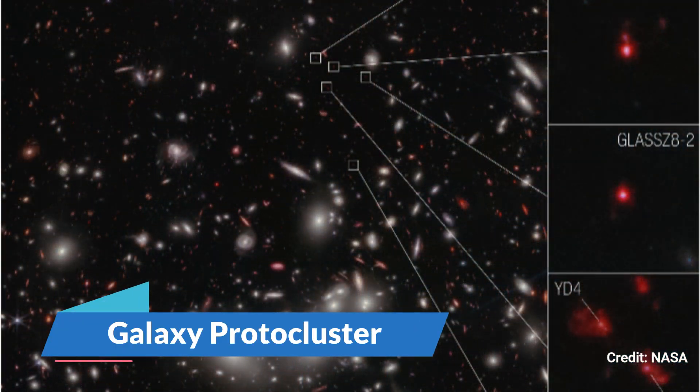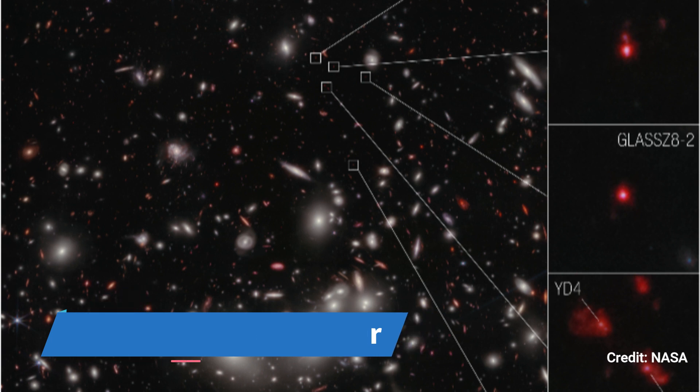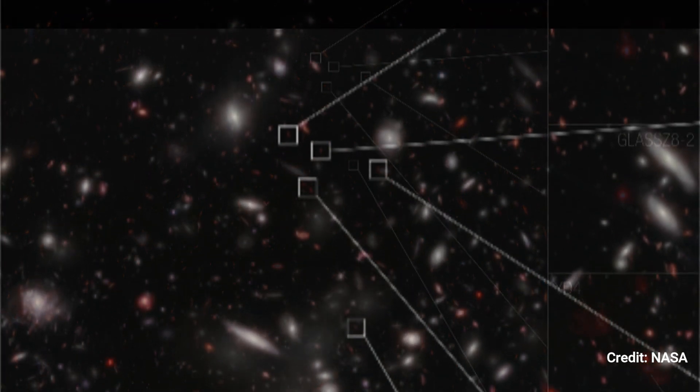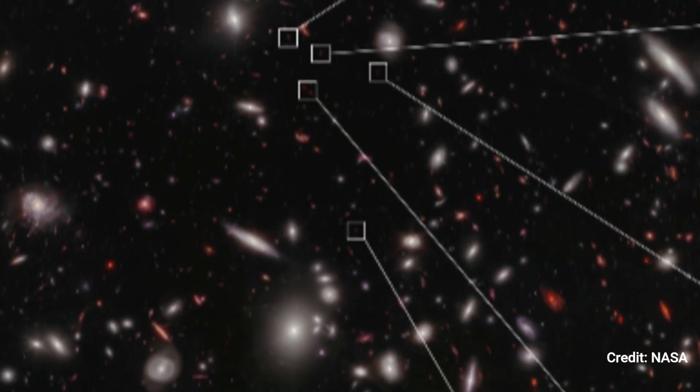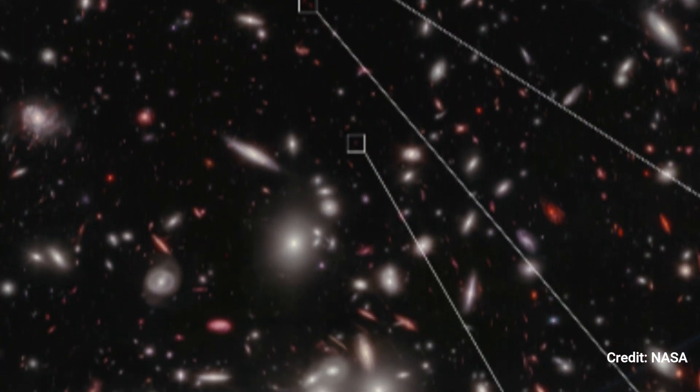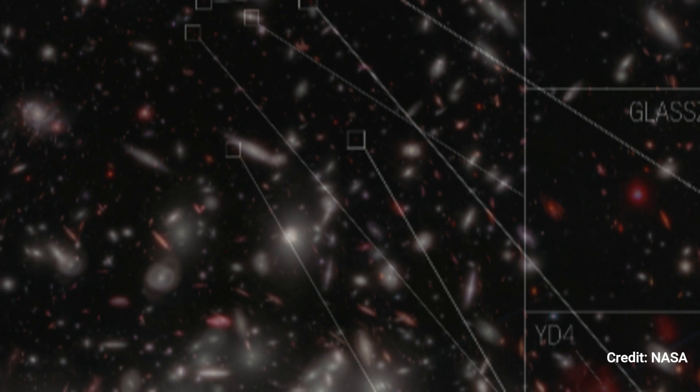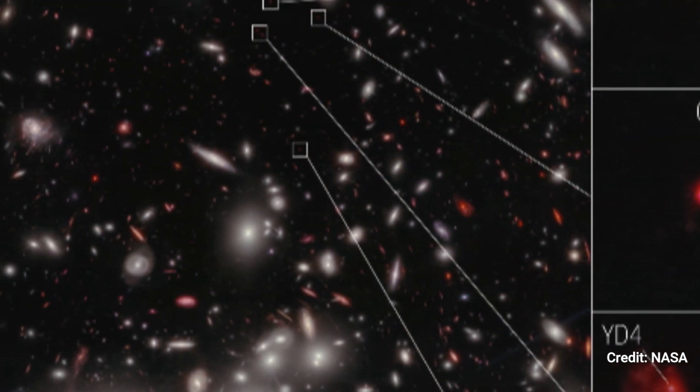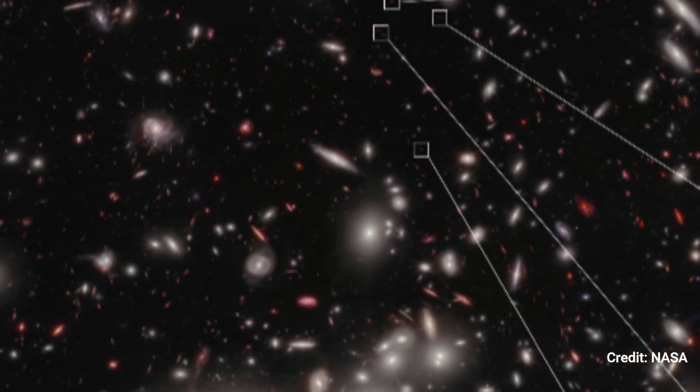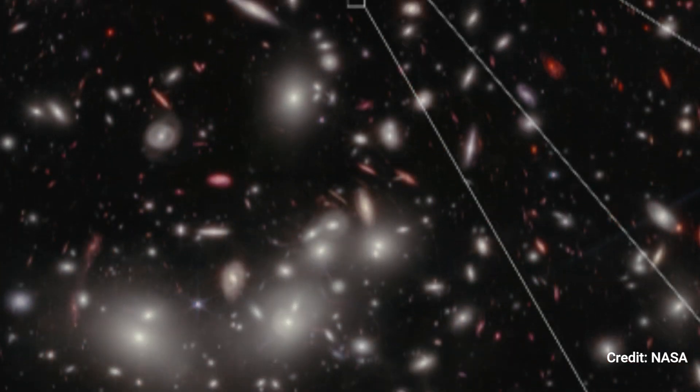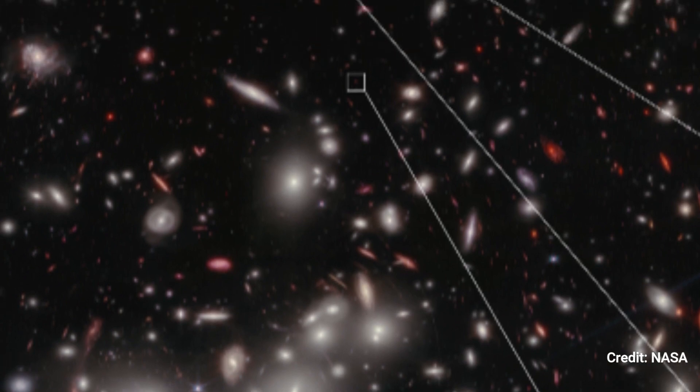Galaxy Proto-Cluster. The seven galaxies depicted in this James Webb Space Telescope picture have been proven to be at redshift 7.9, which corresponds to 650 million years after the Big Bang. As a result, they are the first galaxies to be spectroscopically proven as part of a growing cluster. The near-infrared spectrograph instrument on the telescope was used to precisely measure the distances and conclude that the galaxies are part of a growing cluster.